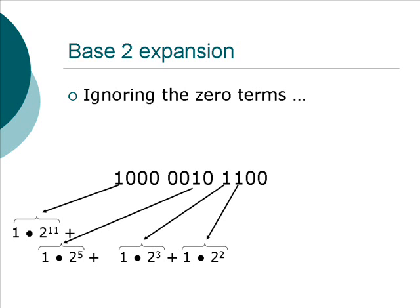So, just looking at the terms that are 1 and expanding those, we have 1 times 2 to the power of 11, plus 1 times 2 to the power of 5, plus 1 times 2 to the power of 3, plus 1 times 2 to the power of 2, or 2 squared.